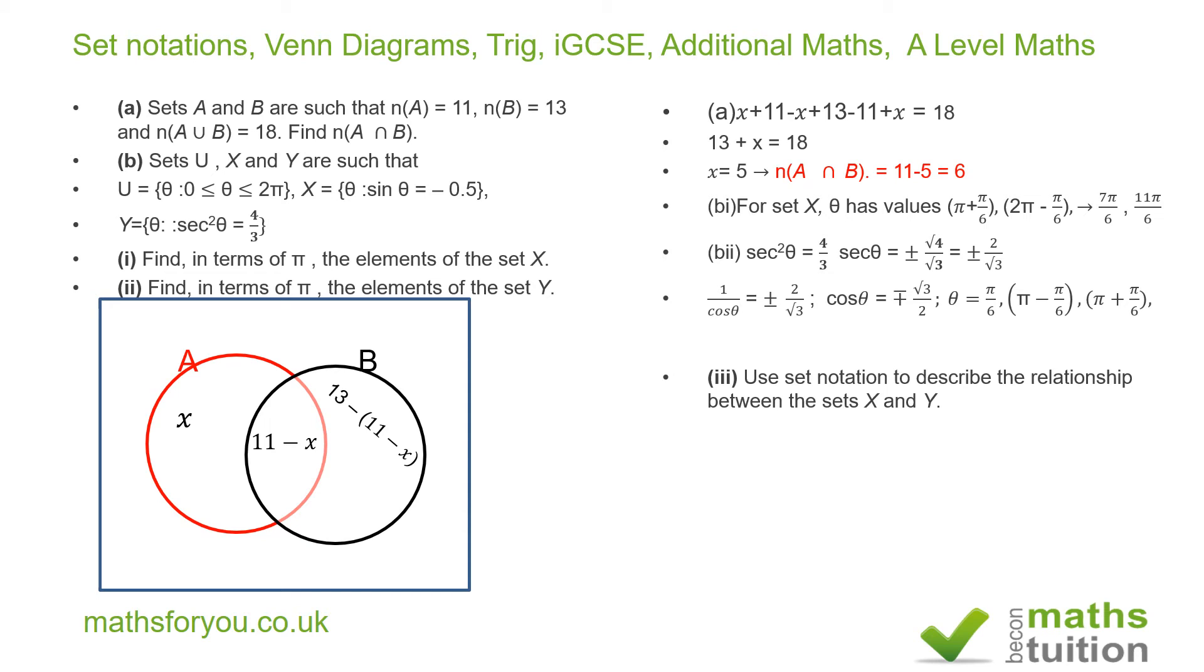So we expect, because this is minus and plus, we expect theta values to be in all four quadrants. So the first one is π over 6, the principal angle, and then π minus π over 6, and then π plus π over 6, and finally 2π minus π over 6. So for set Y, we get all these angles there.